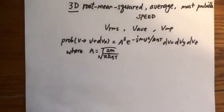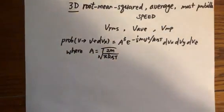In this video I will derive the root mean squared speed, the average speed, and the most probable speed of a three-dimensional particle. The shorthand notations are V sub RMS, V sub AVE, and V sub MP.